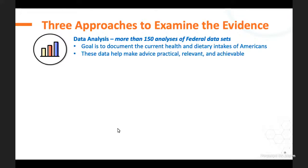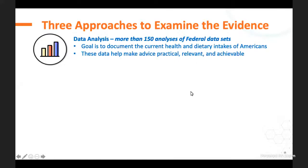The first type of evidence is data analysis, taken on by the Data Analysis Committee working with USDA and HHS staff. This is an analysis of federal data sets, including NHANES data, What We Eat in America, and others, as well as health status. More than 150 analyses were performed with the goal of understanding current status and making our advice practical, relevant, and achievable.